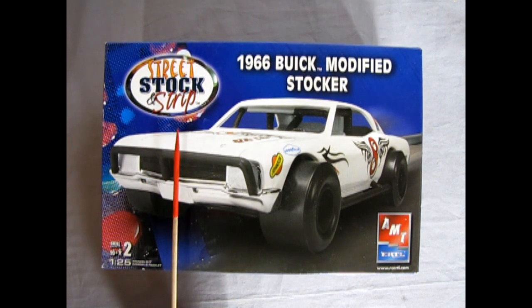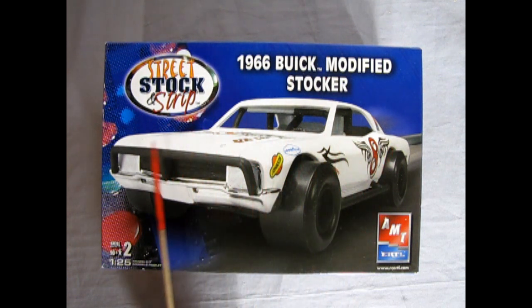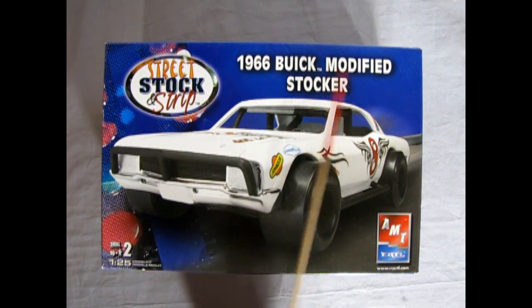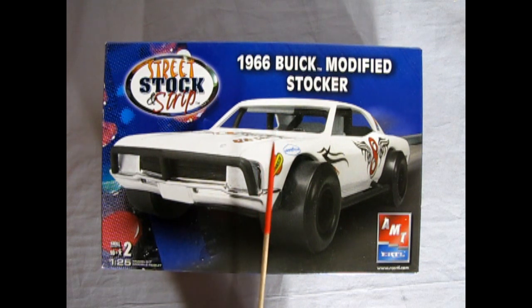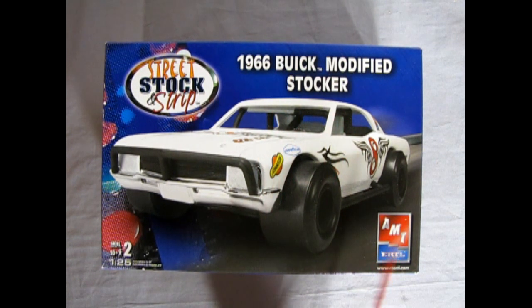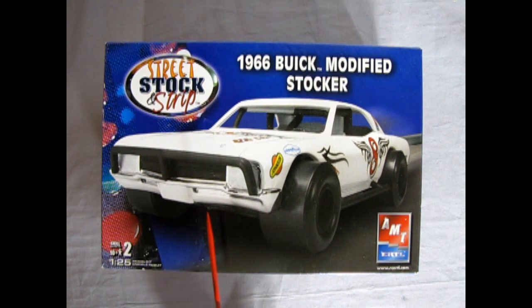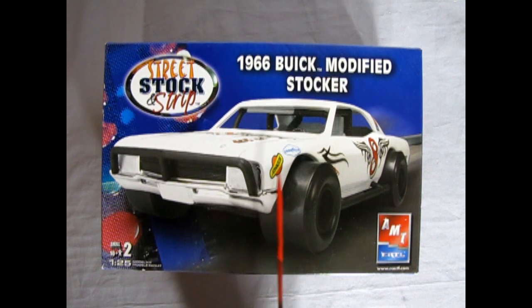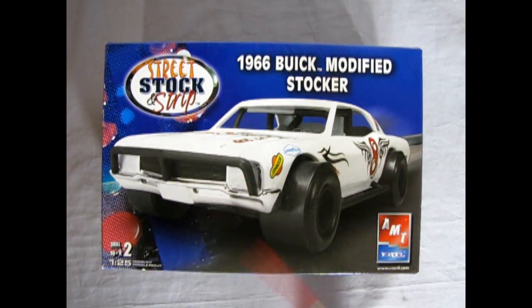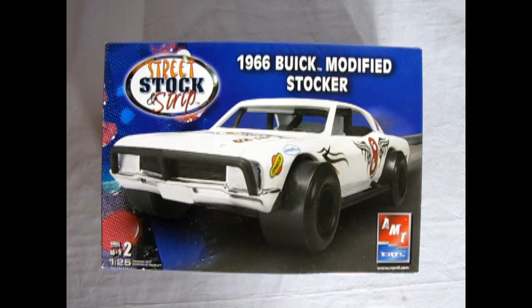Now this kit is my fourth model kit in this street stock and strip series. Of course we had our 1934 Ford, our 1935 Chevrolet, the 1965 Oldsmobile and now last but not least our 1966 Buick Modified Stalker. Now these modified Stalker series originally came out in the 1968-1969 AMT calendar year, the original AMT. And these cars were popular back in the day as racing was all the rage in the 60s. So when these model kits came out they were part of a series and when RC2 re-released them they only released four out of that original series.